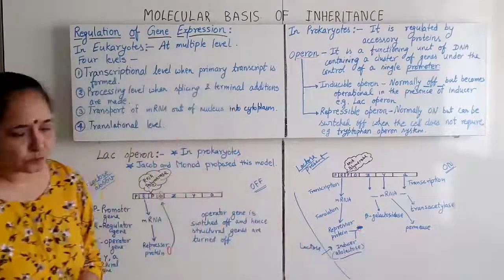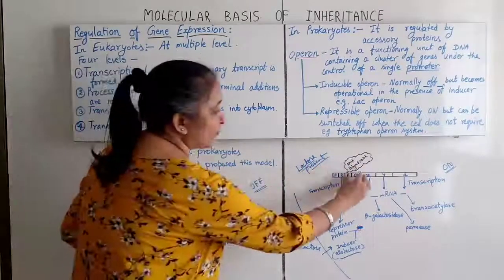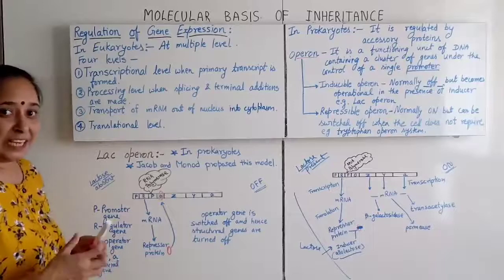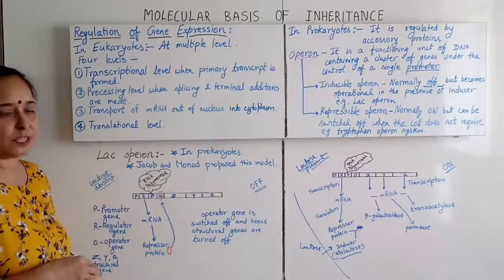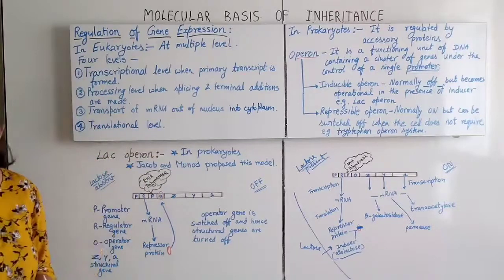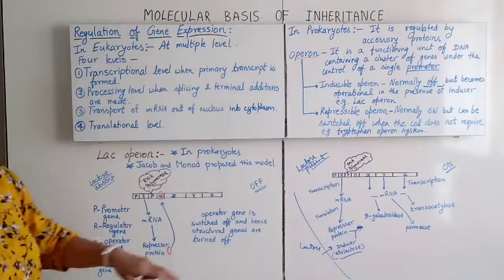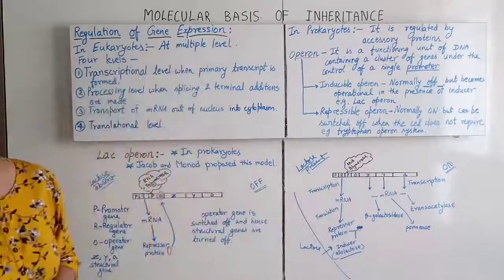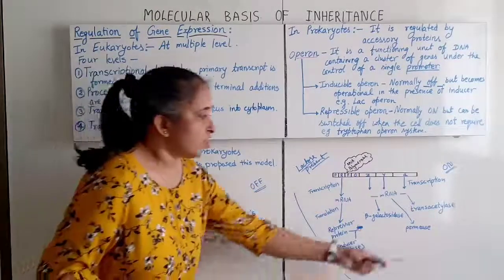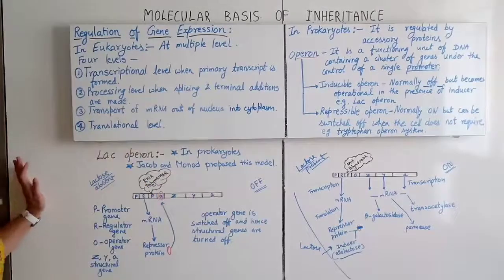Since the repressor protein has not blocked the operator, the path is free. RNA polymerase slides along and initiates transcription of the structural genes. They form messenger RNA, which undergoes translation, producing: Z structural gene → beta-galactosidase enzyme; Y structural gene → permease enzyme; A structural gene → transacetylase enzyme. These three enzymes help in the digestion of lactose.